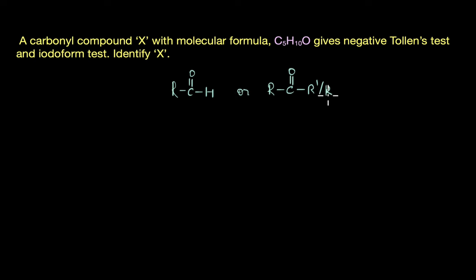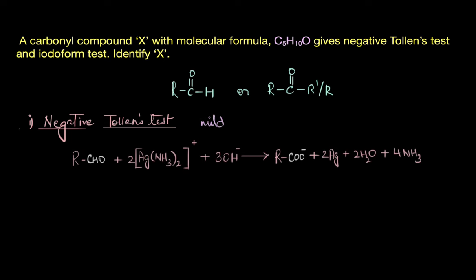The next information is on Tollens test. It is given that X gives negative Tollens test. Now what do you recall about Tollens test? If you remember, Tollens test, also sometimes called the silver mirror test, is basically a mild oxidation reaction. Here carbonyl compound is warmed with ammoniacal silver nitrate solution, also called the Tollens reagent, to form the corresponding carboxylate ion and silver.